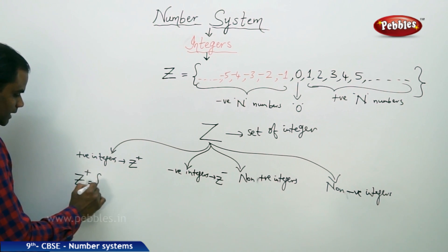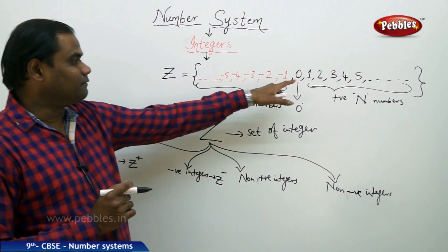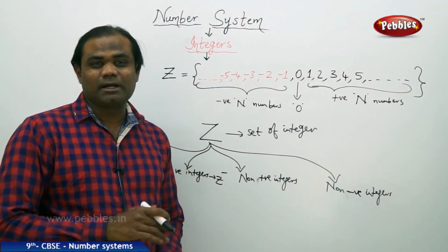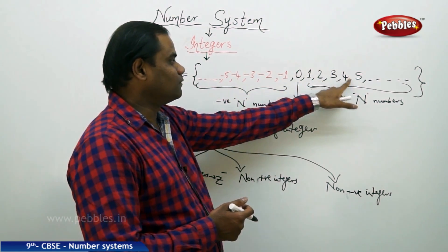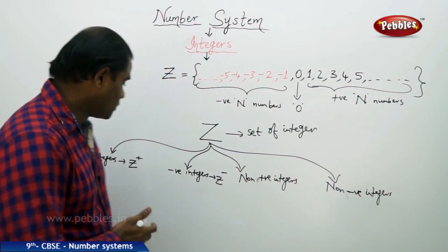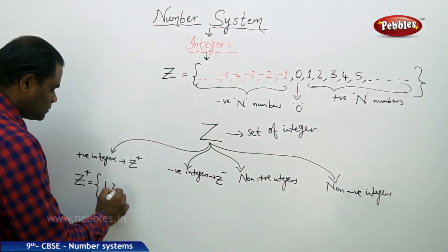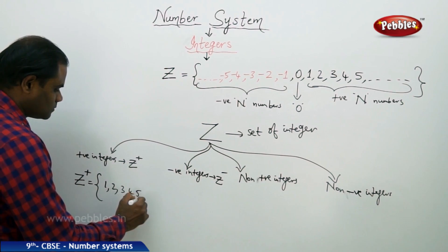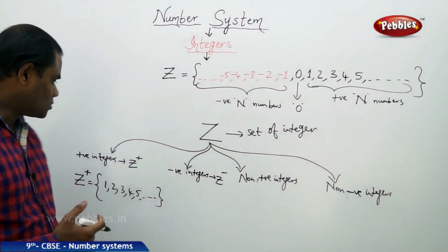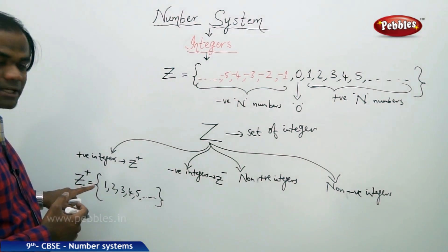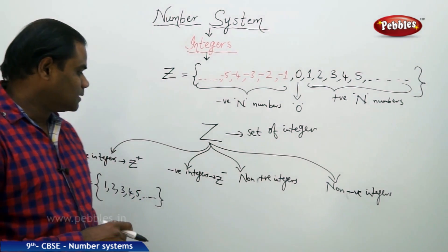Z plus, as clearly stated for positive integers, means we pick only the positive part of the integers. The positive integers start from 1, 2, 3, 4, 5, and so on. Therefore, the set Z plus has all numbers starting from 1 and continuing to infinity — so the set of positive integers denoted by Z plus is 1, 2, 3, 4, 5, and so on.